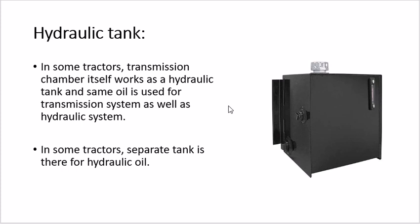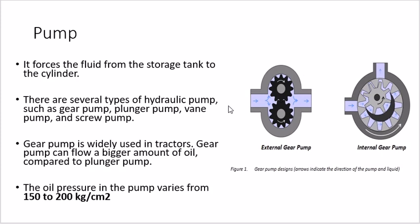The next part is the pump, which is a basic element of the hydraulic system. It increases the pressure of the fluid used in different parts of the tractor. In tractors, we mostly use a gear pump. Gear pumps are of two types: external gear pumps, where two gears mesh from the outside, and internal gear pumps, where two gears mesh from the inside. The oil pressure produced ranges from 150 to 200 kg per centimeter square.